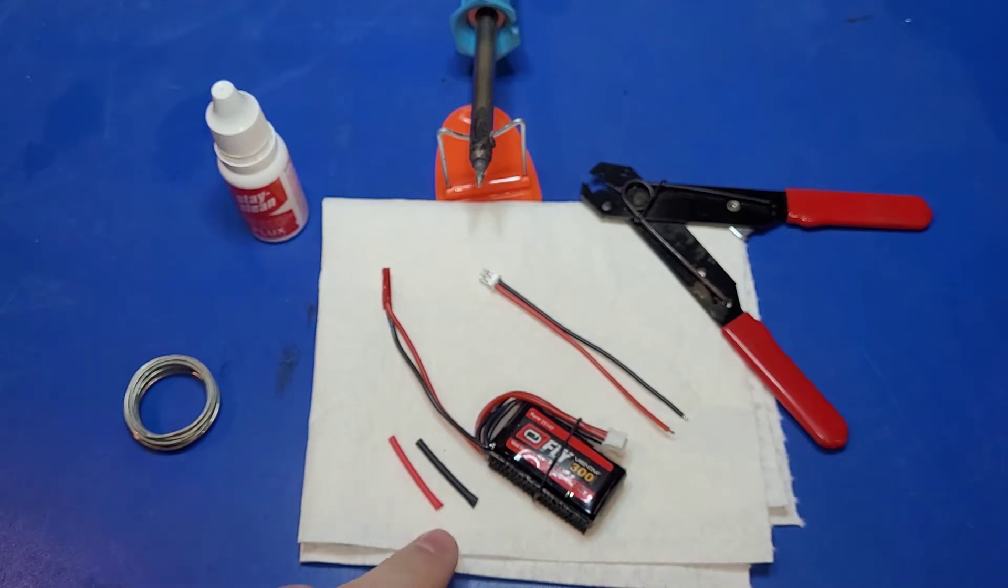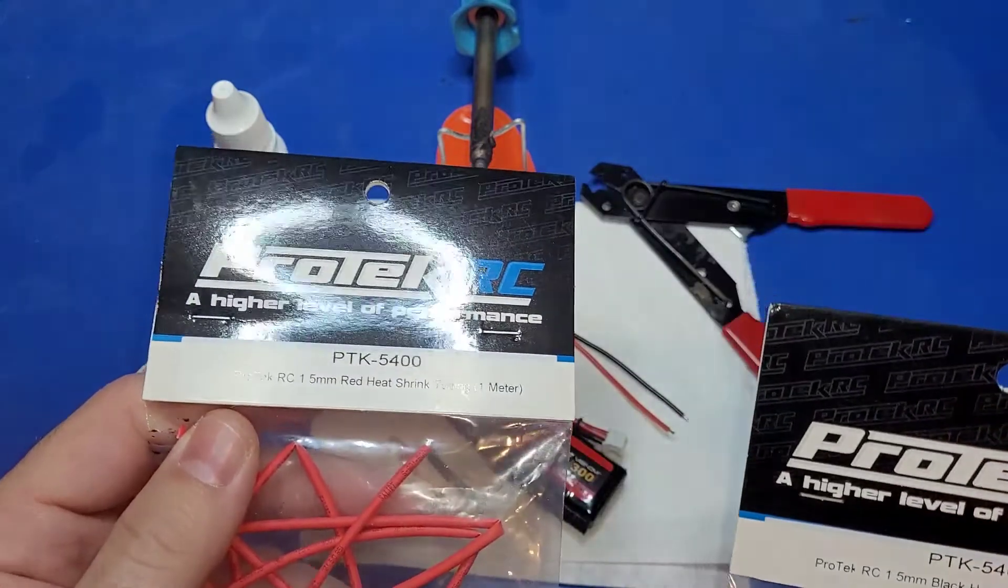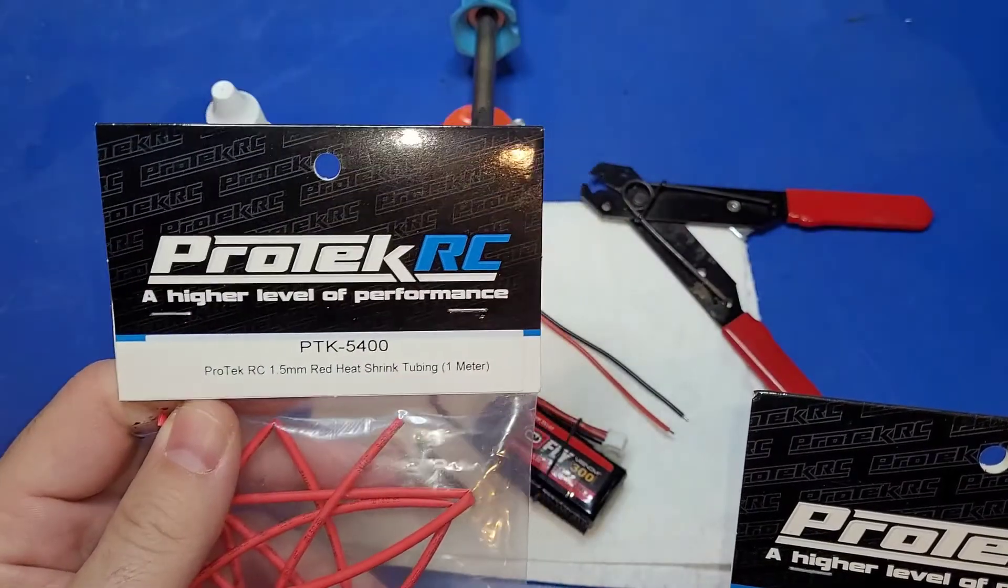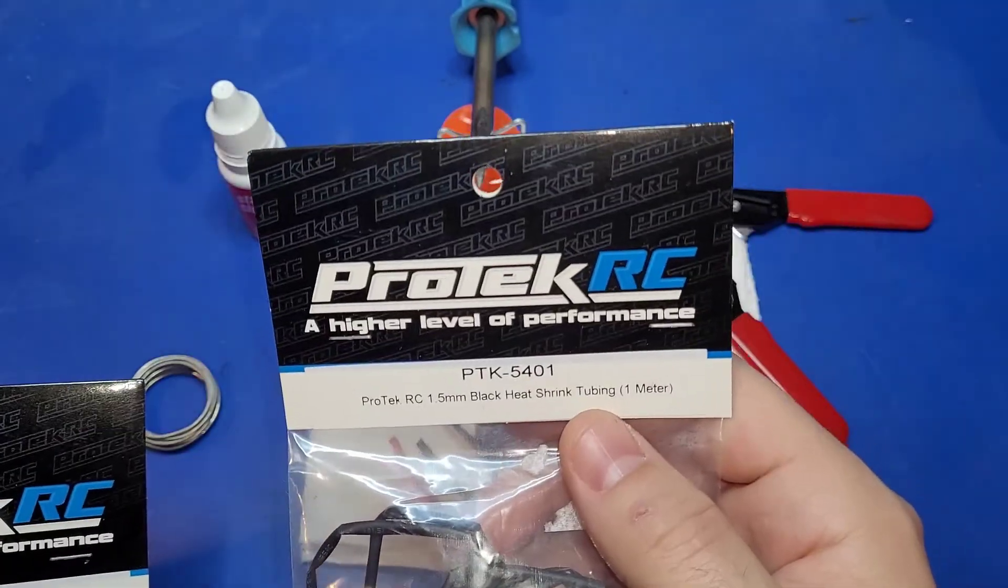Then these heat shrink tubes I found at my local hobby shop. And these are the part numbers for that, for the red and the black.